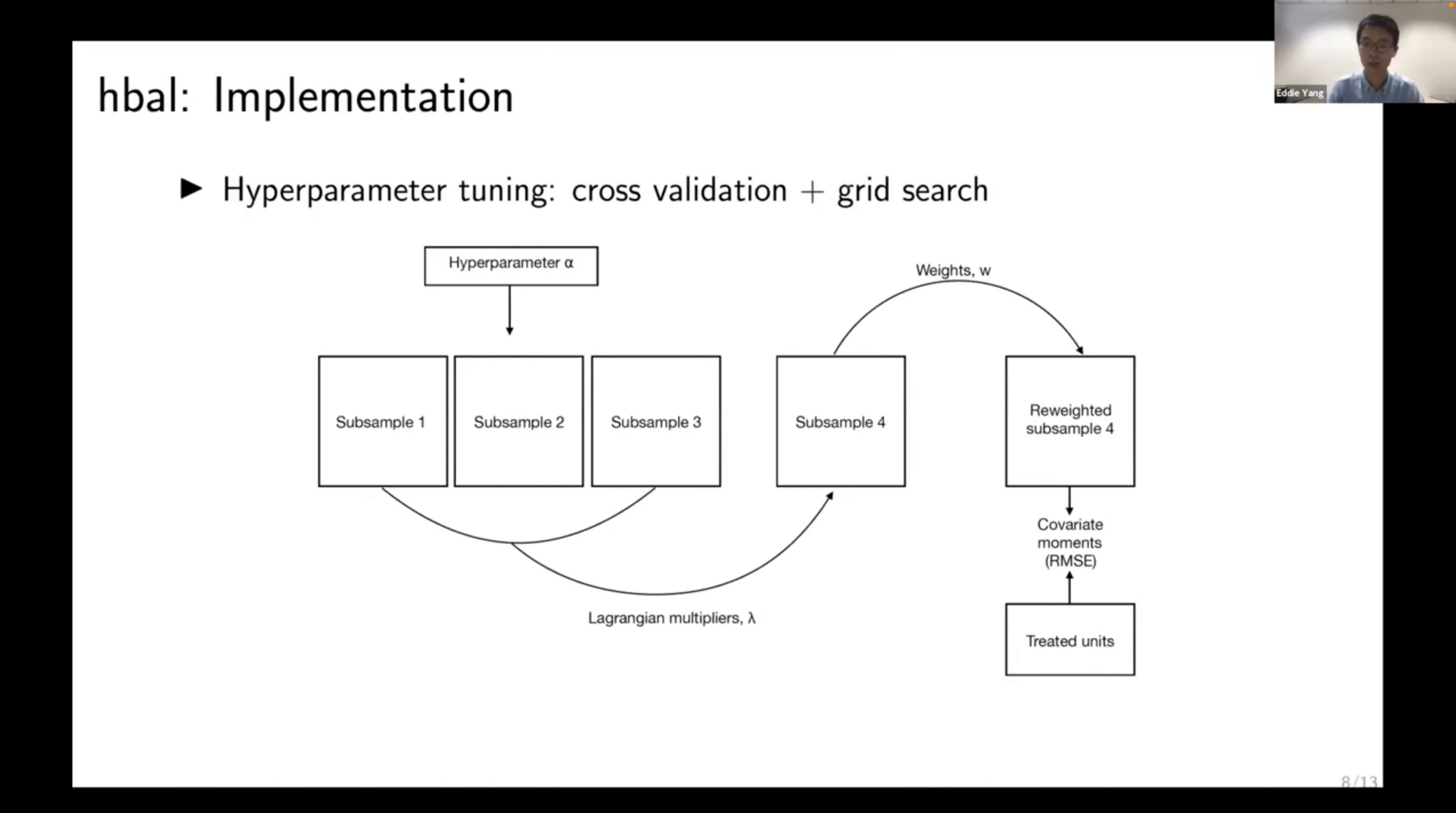And on the right panel here, is a runtime comparison between KBAL and HBAL. So this is runtime in seconds per iteration. So as you can see, as the sample size increases, the runtime for KBAL increases exponentially, whereas HBAL uses only a fraction of KBAL's runtime.